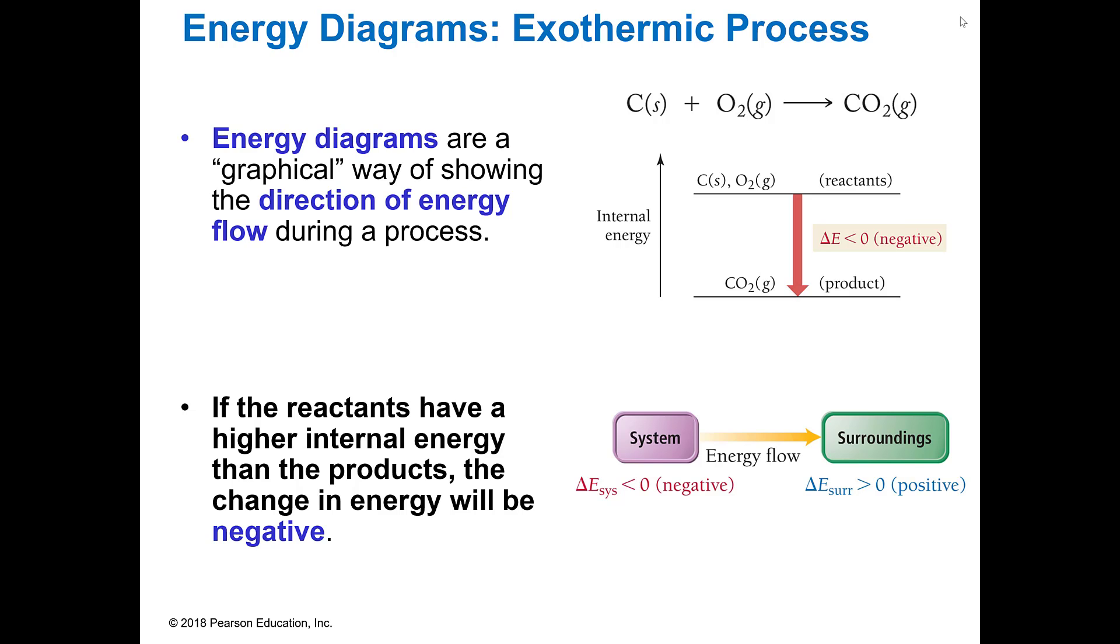An energy diagram is a way we show the direction of the energy flow. If we have energy from up here going down there, we're showing a negative energy, a decrease in energy. When we do that, and we have that negative flow, we are showing that the change in energy is negative between our reactants and our products. And so when we do that, we have given off heat.